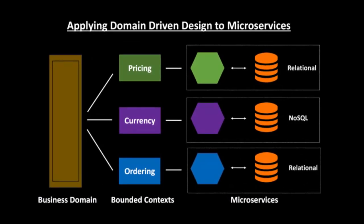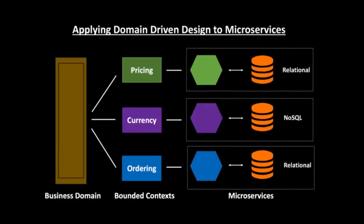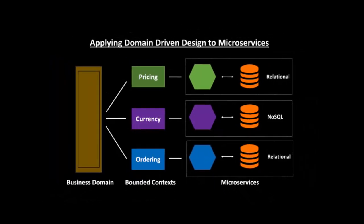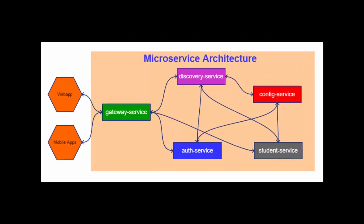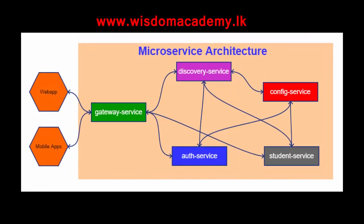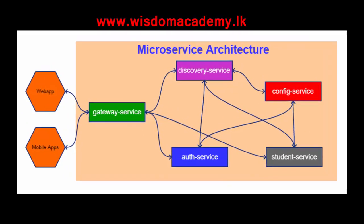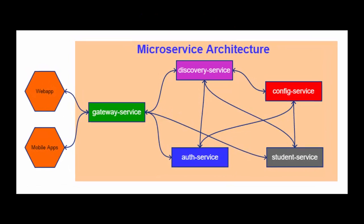But microservices use a dumb message bus which just transfers the input from one service to another, but its endpoint is smart enough to do the aforementioned tasks. It has a dumb message bus, but smart endpoints.